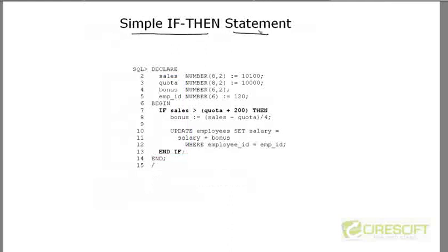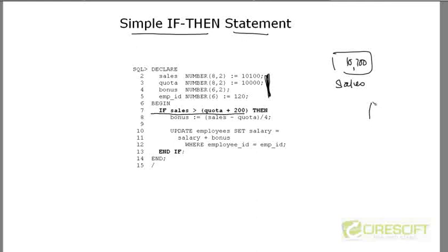The first example is a simple IF-THEN statement. Basically, I am declaring a couple of variables. One variable called 'sales' has the value 10,100. Then in the BEGIN-END section, I give this condition: if sales is greater than quota plus 200. The quota is 10,000, so quota plus 200 is 10,200. So if 10,100 is greater than 10,200 — the answer is no, it's false. That means this condition is not satisfied, so control goes directly to line 30. In this case, I'm not doing anything — I'm just exiting the IF-THEN block.